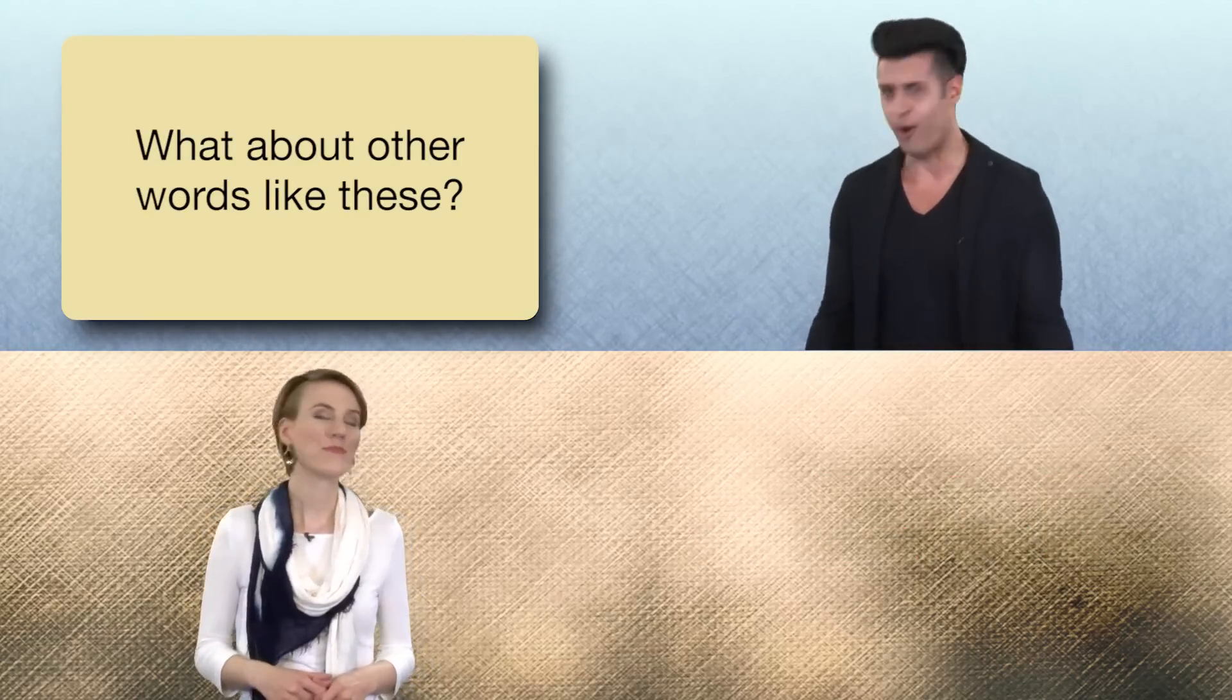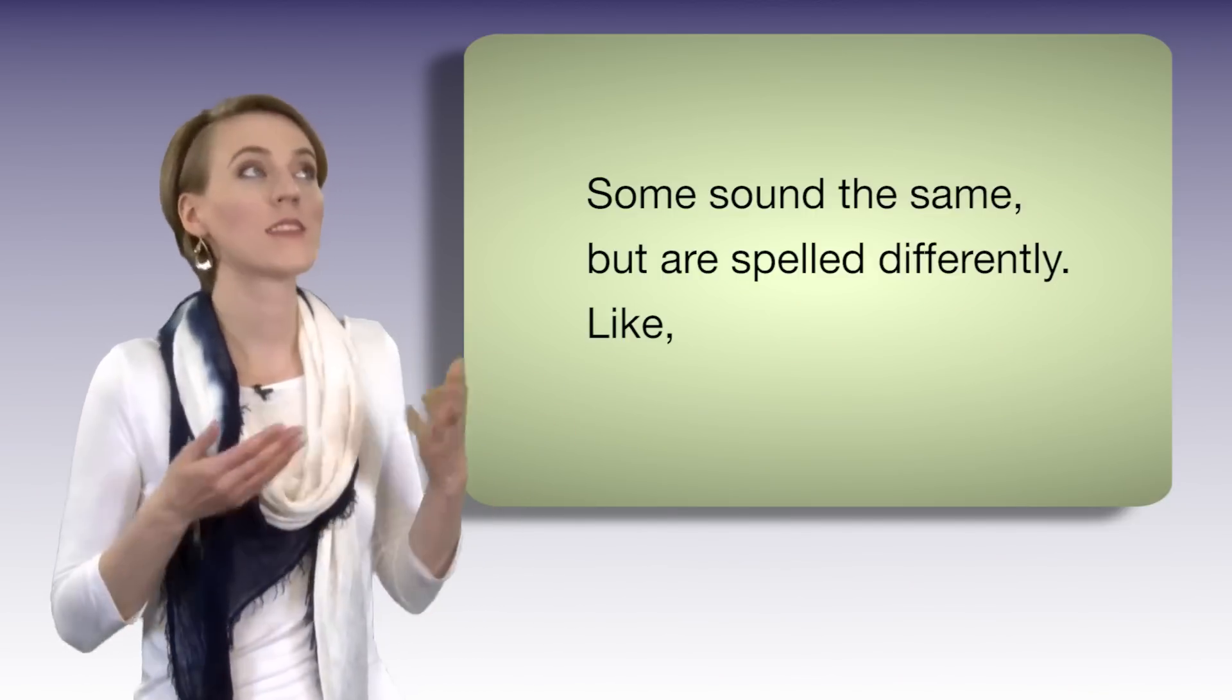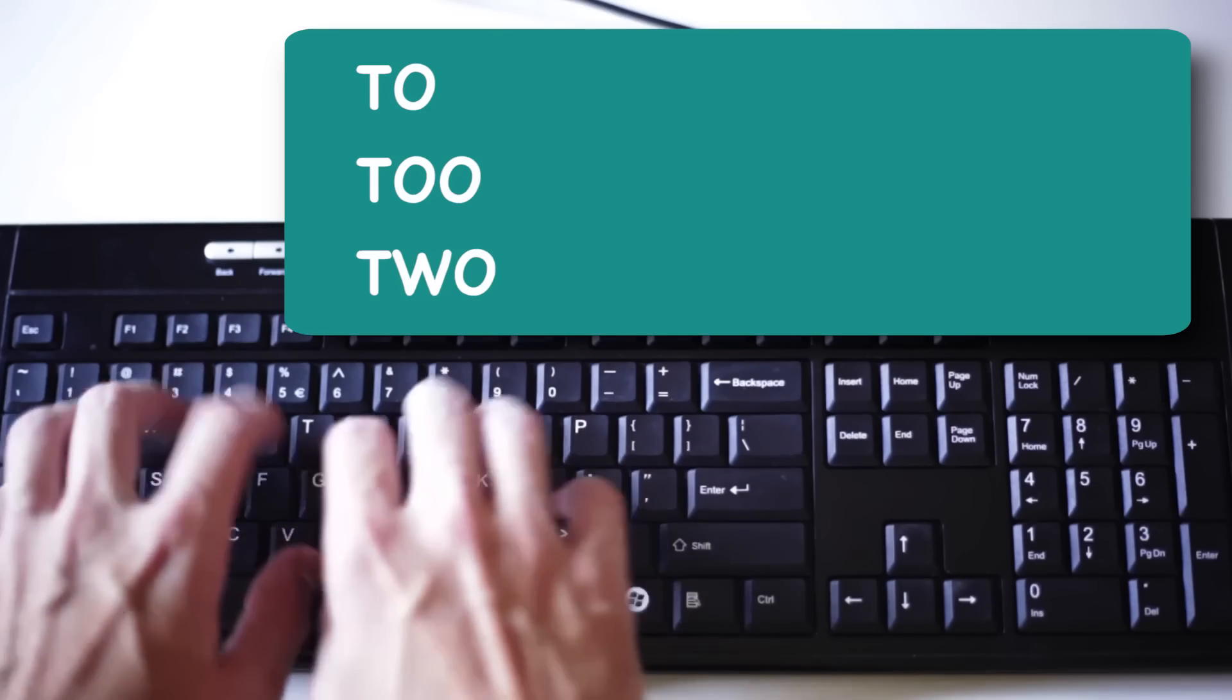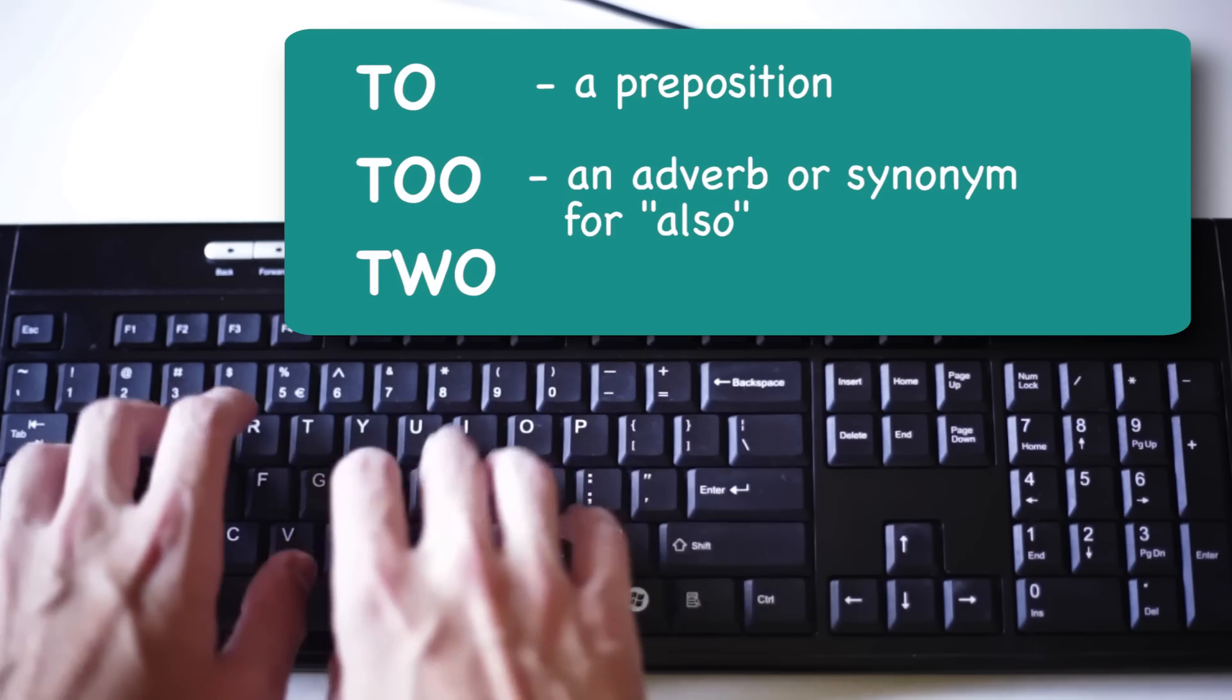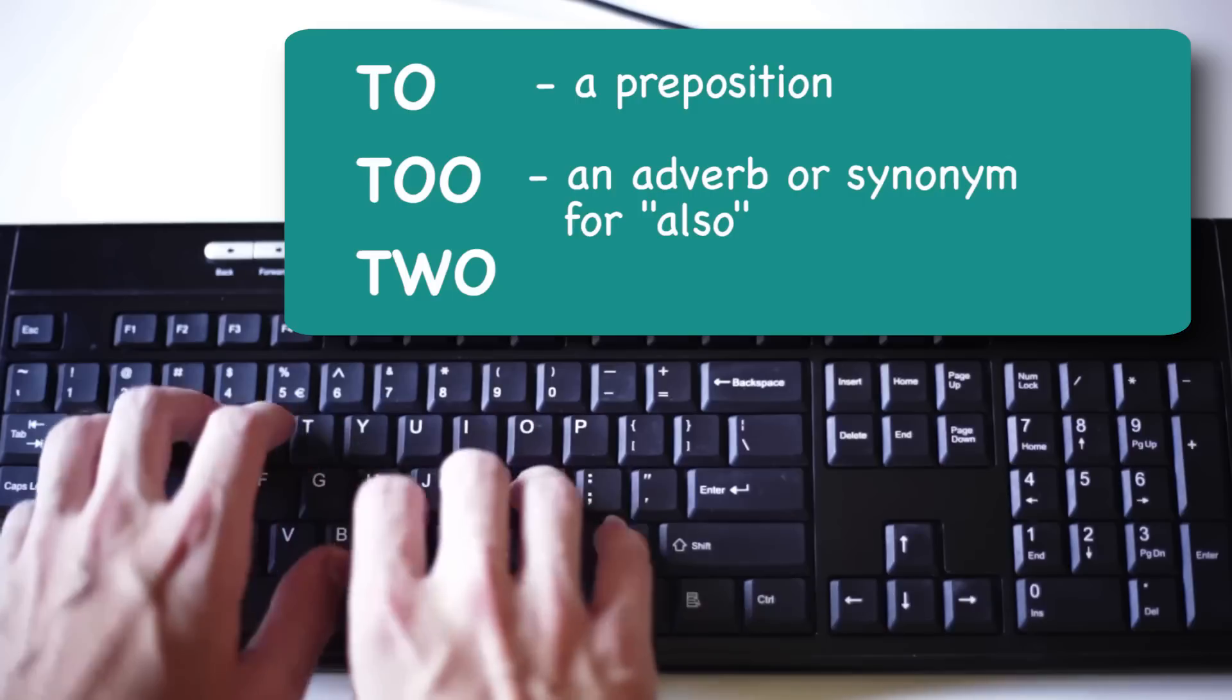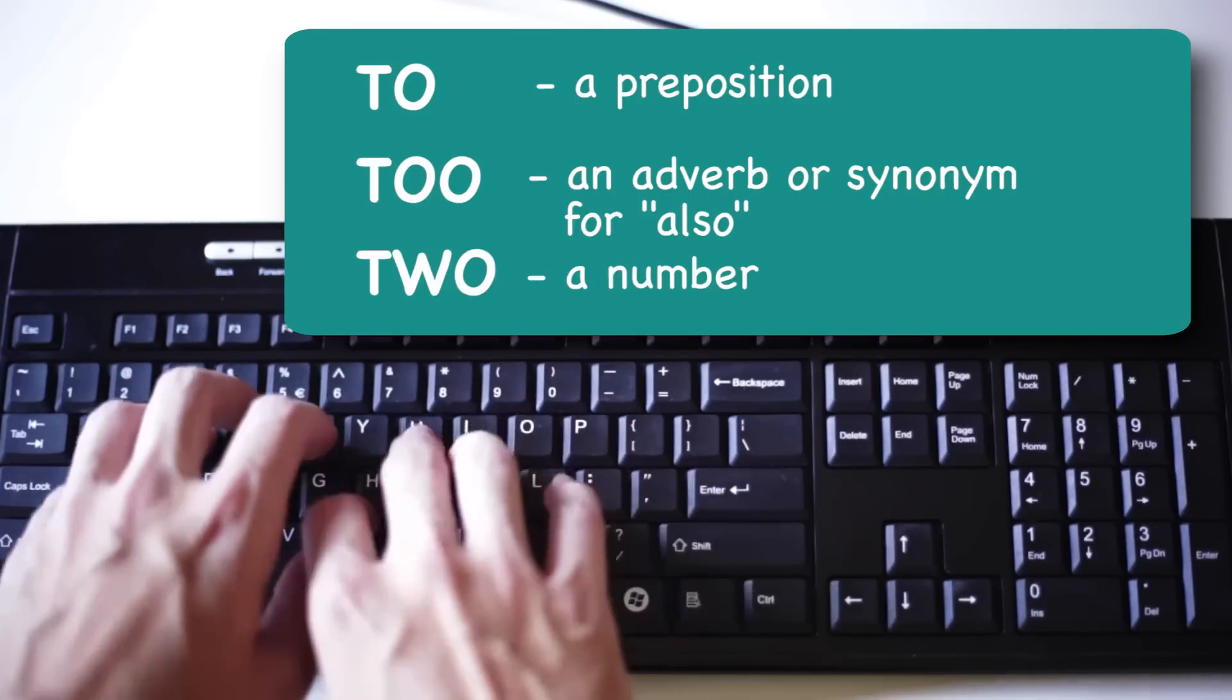What about other words like these? Some sound the same but are spelled differently, like two, too, two. One is a preposition. The other is an adverb or synonym for also. And the last one is a number.